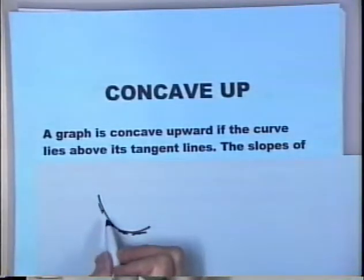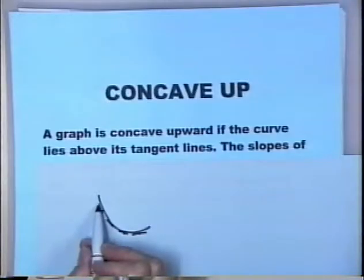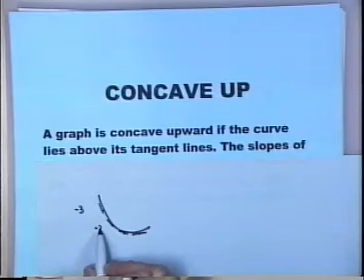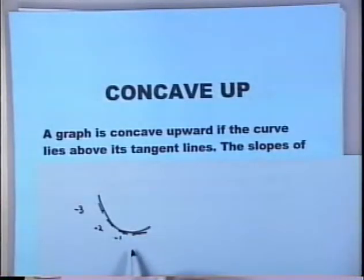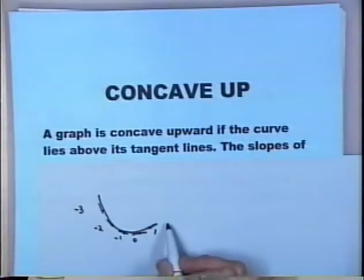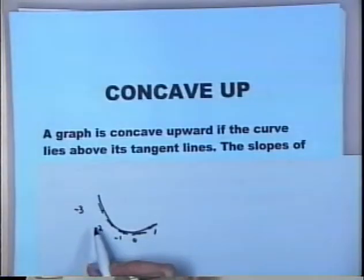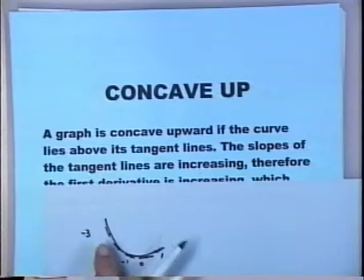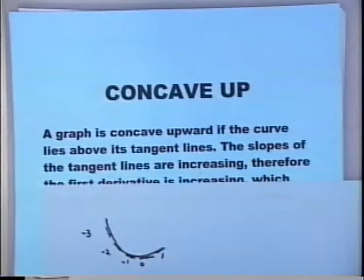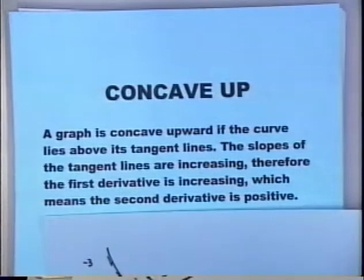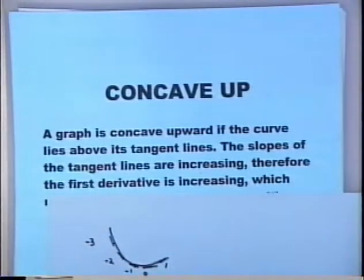Let me show you on a little sketch what we mean about these tangent lines. If you have a curve cupping upward — concave up — notice at any point, if you sketch the tangent line, it would be below the curve. The slopes of these tangent lines increase: maybe negative 3, negative 2, negative 1, then 0, then positive 1, 2. As you go along, these slopes are increasing, and the second derivative tells us where the first derivative is increasing.